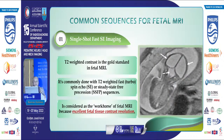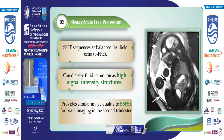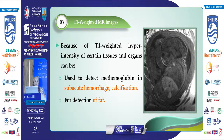The most common pulse sequences for fetal MRI include single shot fast spin echo sequence, which is the gold standard due to excellent fetal tissue contrast resolution. We also use steady-state free precession sequence, which displays fluid in motion as high signal intensity and provides similar image quality to single shot fast spin echo, especially for brain imaging in the second trimester. T1-weighted MRI is used to detect hemorrhage, calcification, and fatty lesions due to T1 hyperintensity of certain tissues.